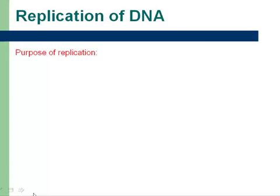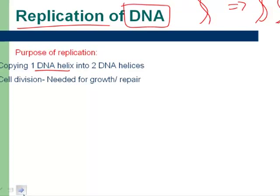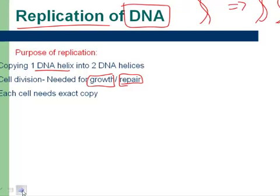Now that we know the structure, sometimes we're going to have to replicate this DNA — make the exact same copy. Why would we want to do that? Replication means turning one DNA helix into two DNA helixes. The reason: if we ever get hurt and have to repair our cells, in order to get a new cell, you want to have the same DNA in it, so it needs to replicate. Also, if we want to grow, any cell division requires identical cells, and each cell needs an extra copy — that's why we need two sets of DNA.